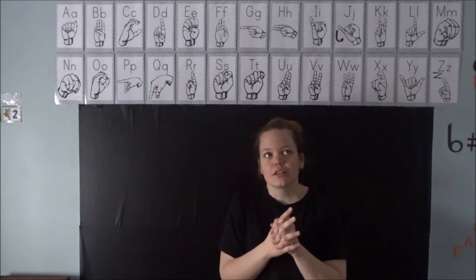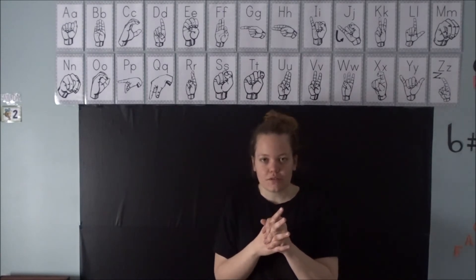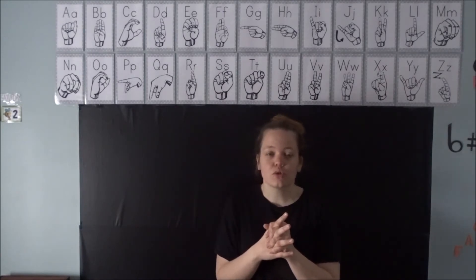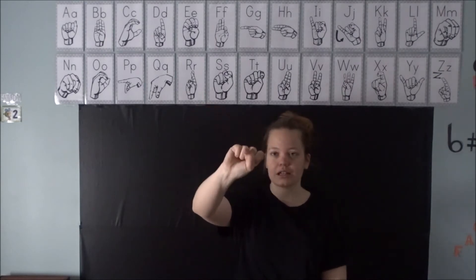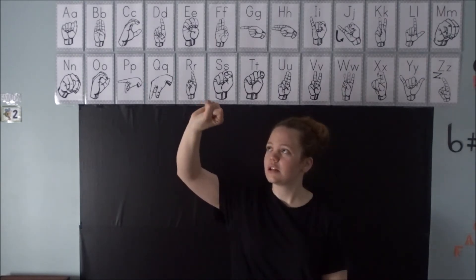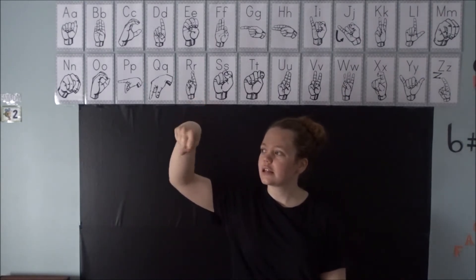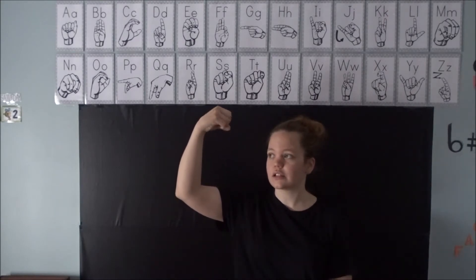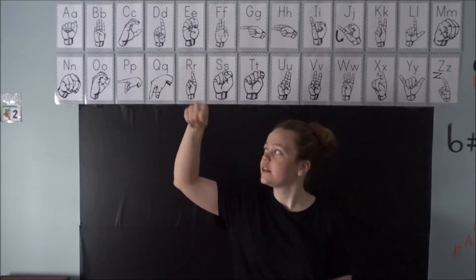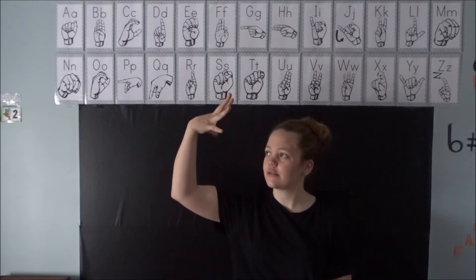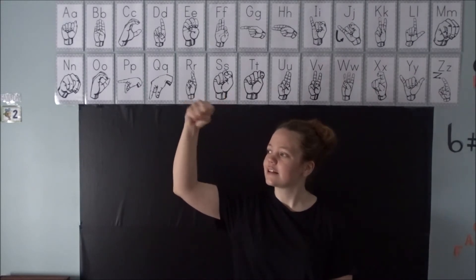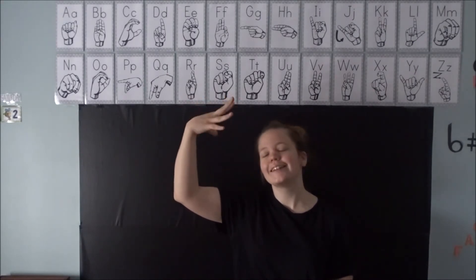Now if you watched the fishing video you will already know this sign — it's the sign for sun. You are going to take what is almost like your S handshape, rotate your hand, and open it up. Sun. Almost like the sun is rotating and showing its rays. Sun.